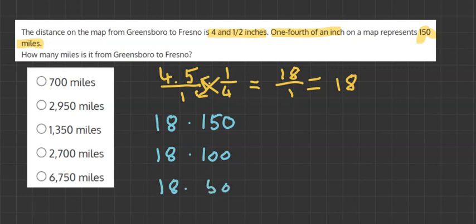18 times 100 is very easy because we can just put the zeros on the end and add the 18 before it. Now for 18 times 50, we know 50 is half of 100, so our answer is going to be half of the answer here. Half of 1800 is 900.